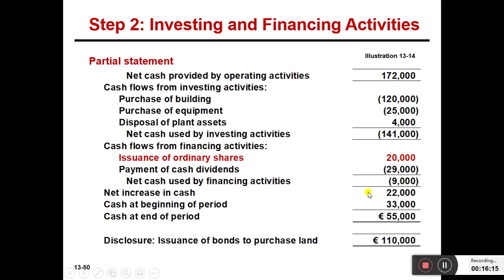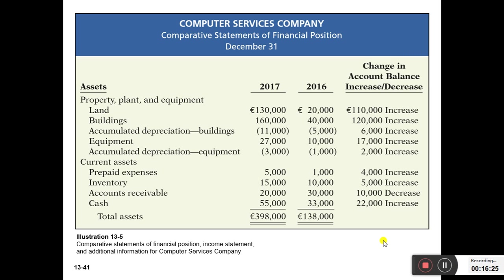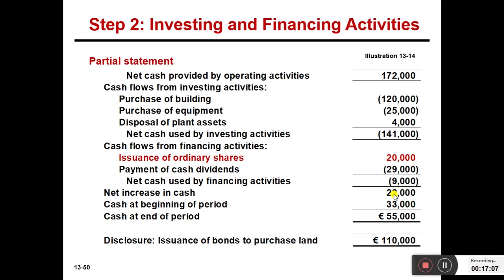The net increase in cash from all three activities is 22,000. If you look at the balance sheet, the beginning cash balance is 33,000 and the ending cash balance is 55,000 — a difference of 22,000. Both figures tally, which confirms the cash flow statement is correct. If they don't tally, there is some mistake. Beginning balance 33,000 (year start) plus net increase of 22,000 from operating, financing, and investing activities equals cash at the end of the period: 55,000 euros.